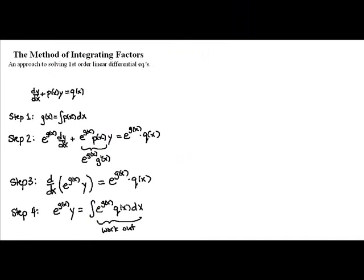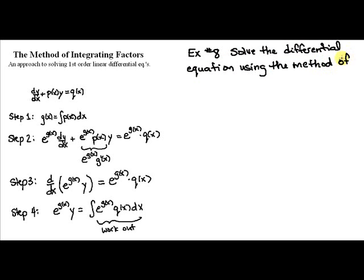To do this, we're going to start with example 8, or rather item number 8 in the homework section for section 9.1. The instructions say solve the differential equation using the method of integrating factors. They give us dy/dx minus 4xy equals 0.